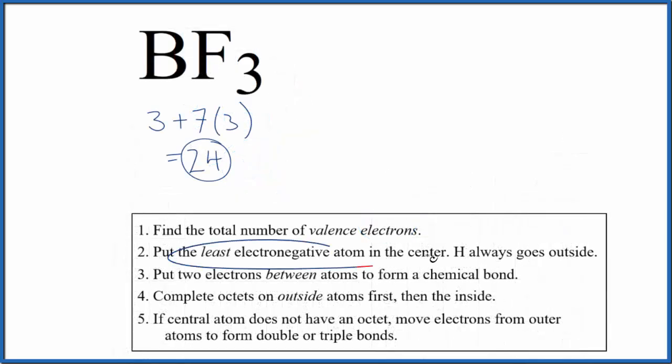We'll put the least electronegative element in the center. Boron is the least electronegative. Fluorine is the most electronegative element on the periodic table. So we have our boron, and then we'll put three fluorine atoms around it.